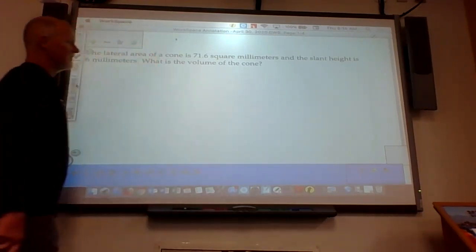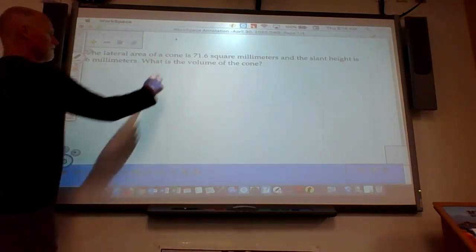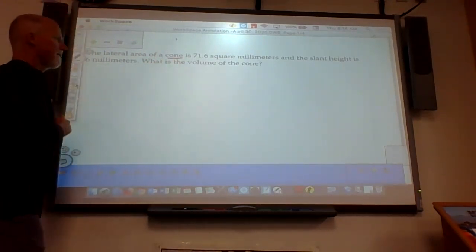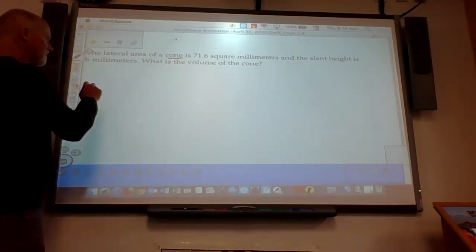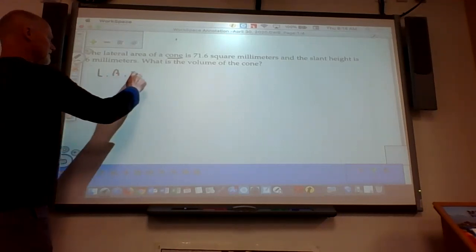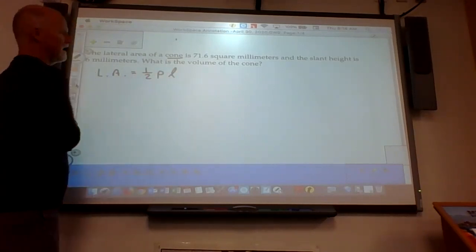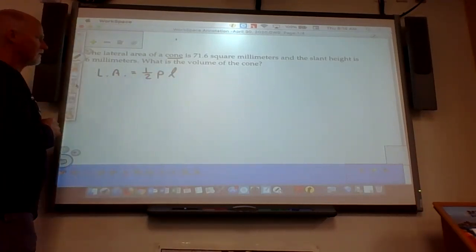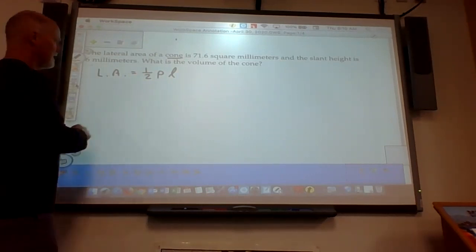So we have a number of things here that we are going to need to make sure we understand. First of all, that we're dealing with a cone, and they give us the lateral area of that. We need to remember that the lateral area of a pyramid is equal to one-half the perimeter of the base times the slant height. Now, particularly in a cone, there's some things that are eliminated here.